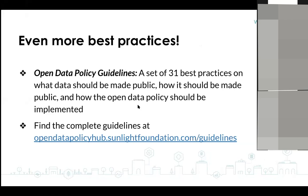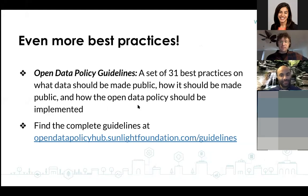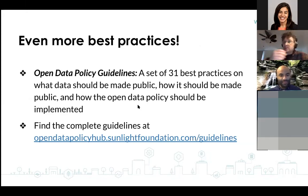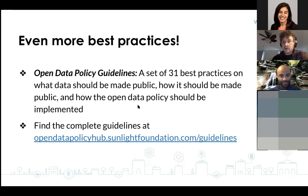Over five years of working with cities, our team has compiled a larger list of 31 best practices, collectively called our open data policy guidelines. They cover what data should be made public, how it should be made public, and how the open data policy should be implemented. We started developing this collection during our earliest work with cities and have been using it extensively as part of the What Works Cities initiative. You can find the full list of open data policy guidelines on our open data policy hub — a screenshot of which is shown here — and we'll be sharing a link to that after the webinar.